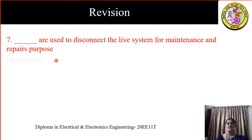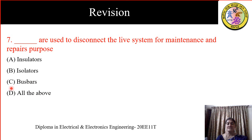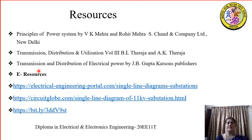The next question is: which is used to disconnect the live system for maintenance and repair purpose? Options are: A) insulator, B) isolator, C) bus bars, D) all of the above. Bus bars and insulators are not used for disconnecting. So it is isolators. The answer is B, isolators. I would like you to refer to the textbooks and links used for creation of this content. I request you all to go through these for better understanding.